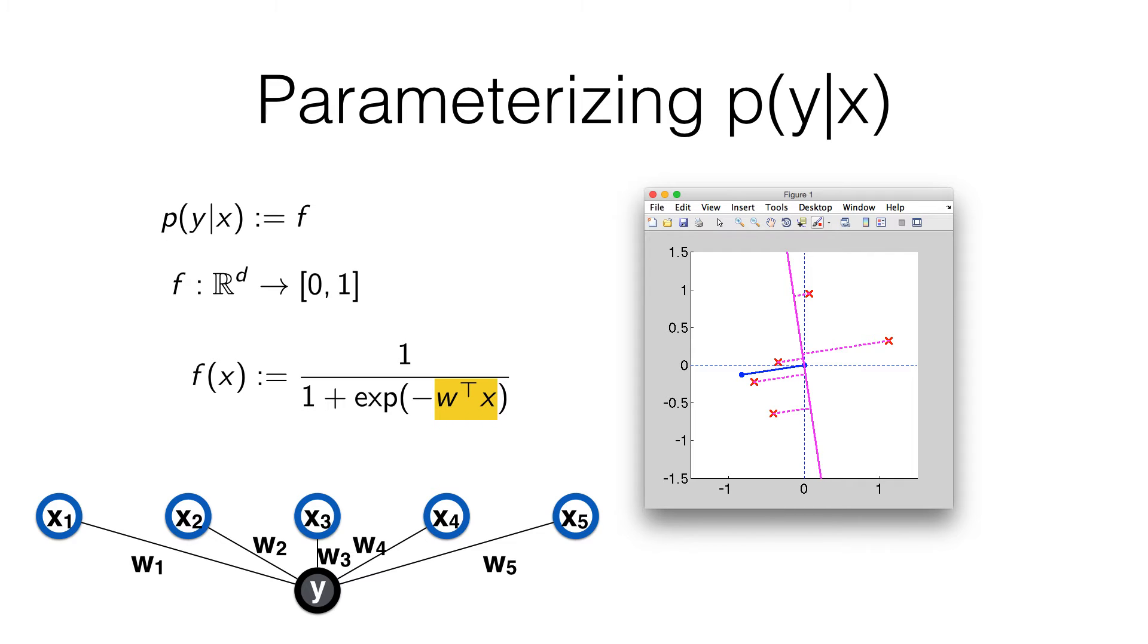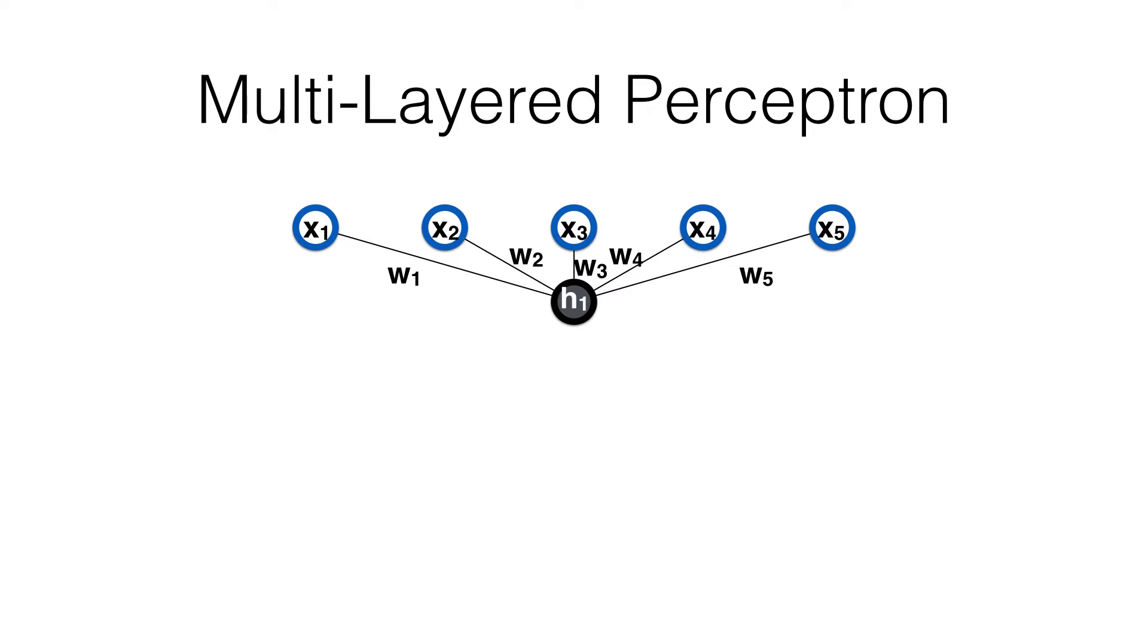That suggests we should want to consider neural networks that have many layers, which gets us to the multi-layered perceptron idea. In the multi-layered perceptron, it starts with the same building block, the same idea of this linear classifier with a squashing function on top of it. Basically, you get all these inputs and use those inputs to decide whether to activate this neuron, which we're going to call h1.